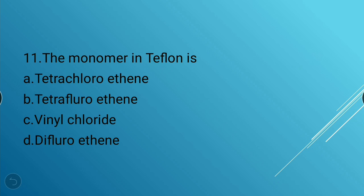Next question: The monomer in Teflon is which of the following? Options: tetrachloroethane, tetrafluoroethane, vinyl chloride, difluoroethane. The answer is tetrafluoroethane — the monomer of Teflon is tetrafluoroethane.